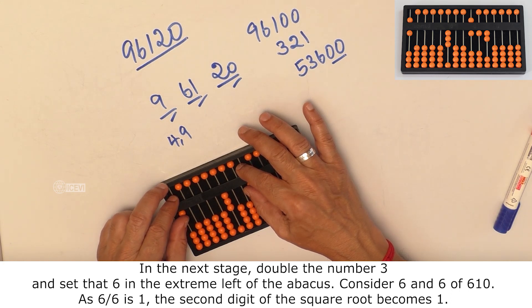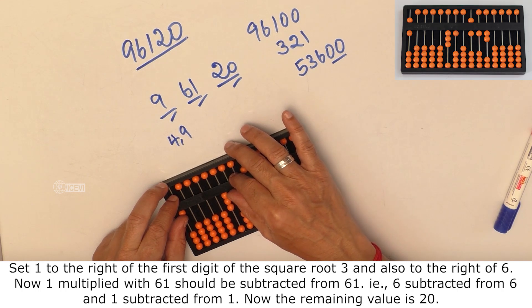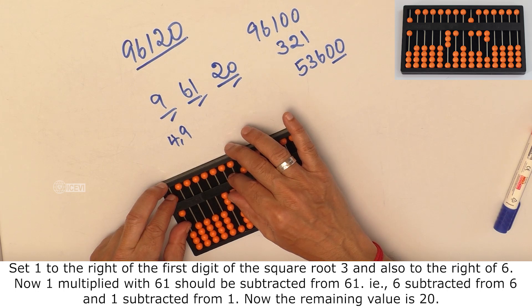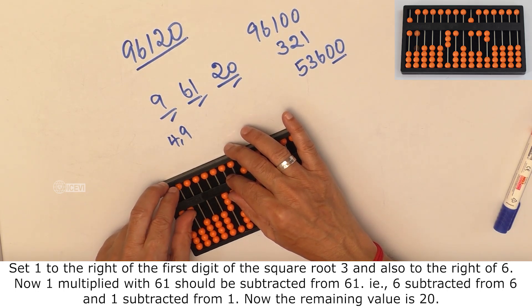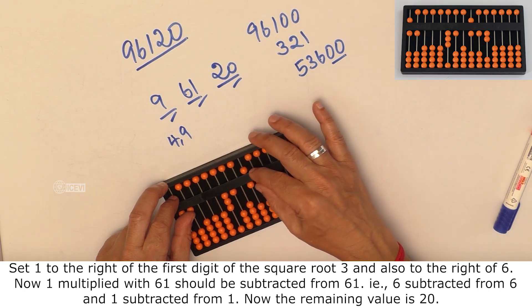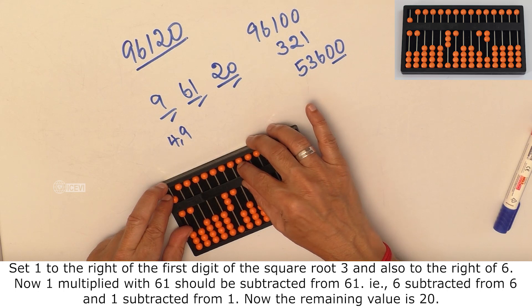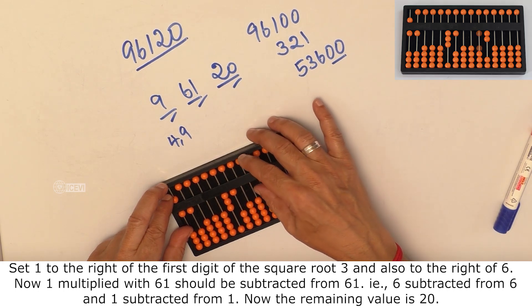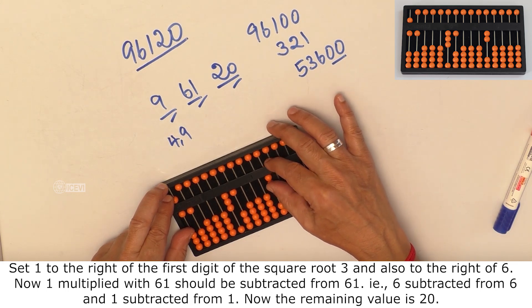Set 1 to the right of the first digit of the square root 3, and also to the right of 6. Now, 1 multiplied by 61 should be subtracted from 61. That means 6 is subtracted and 1 is subtracted. And now the remaining value is 20.